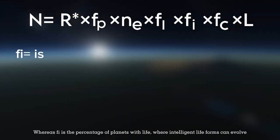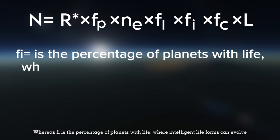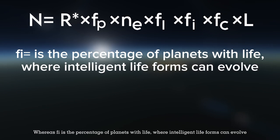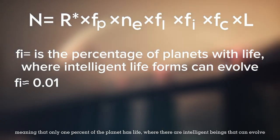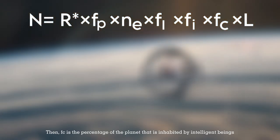Whereas fi is the percentage of planets with life where intelligent life forms can evolve. The estimate for the fi value is about 0.01, meaning that only 1% of the planet has life, where there are intelligent beings that can evolve.